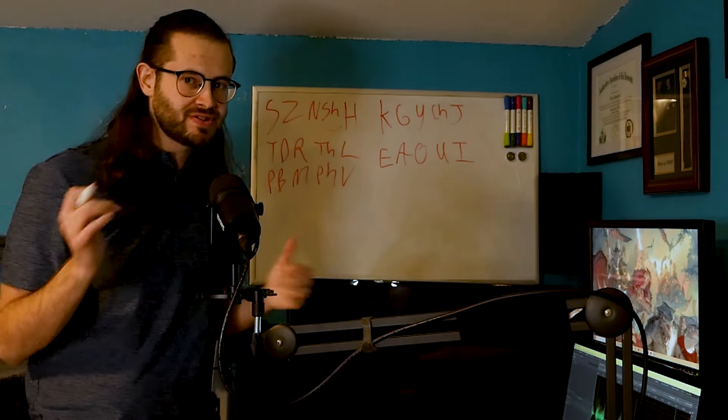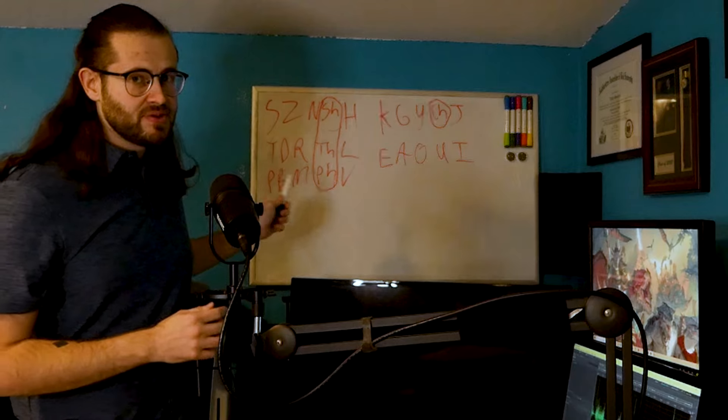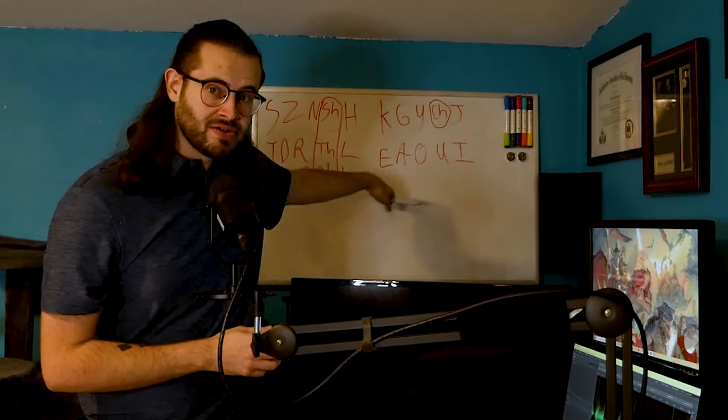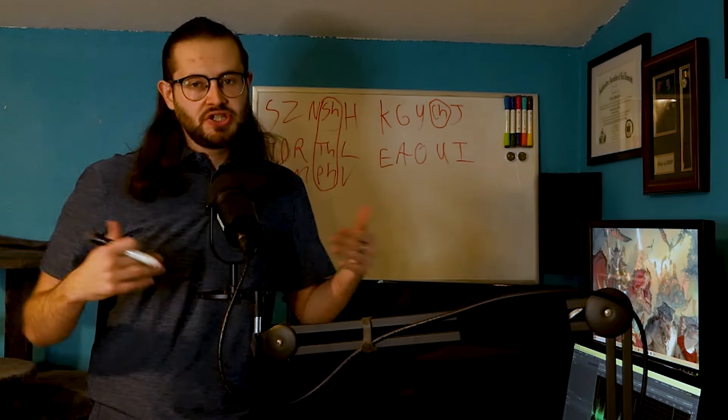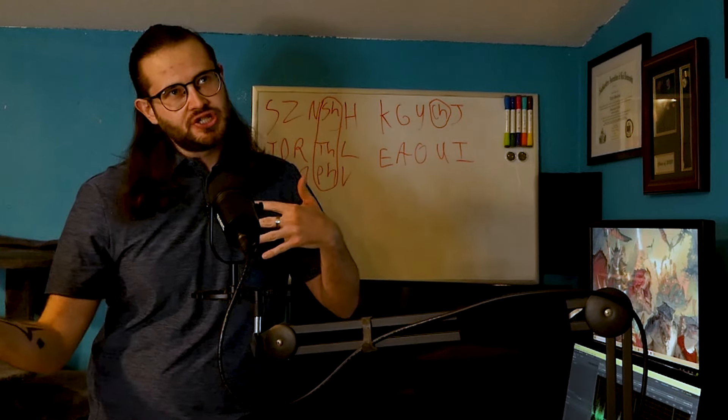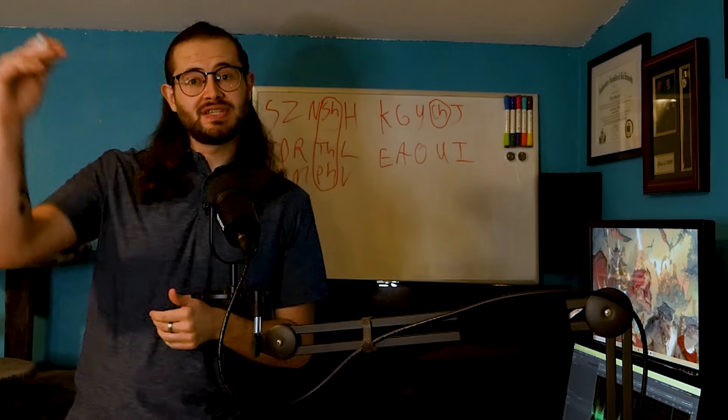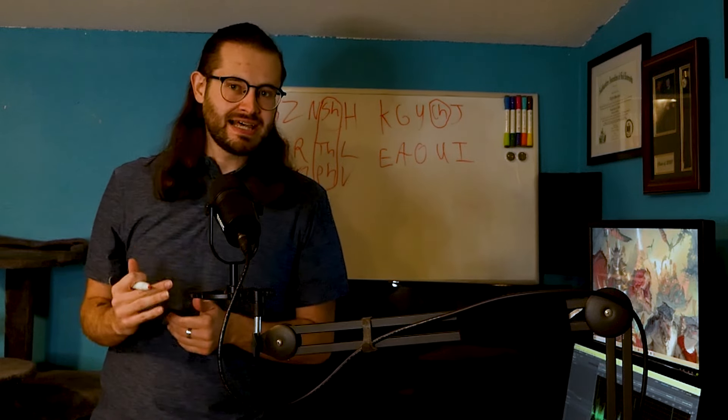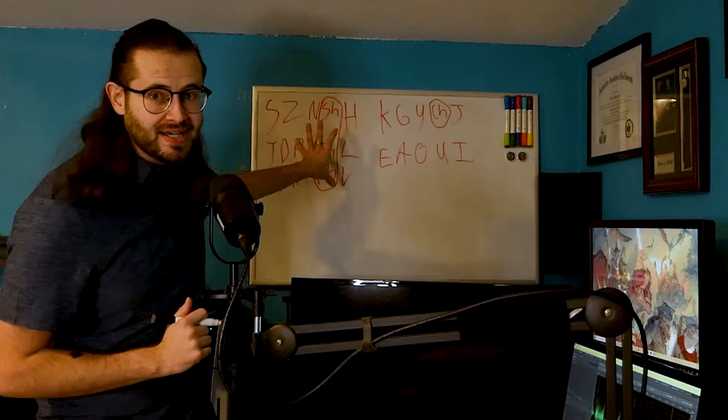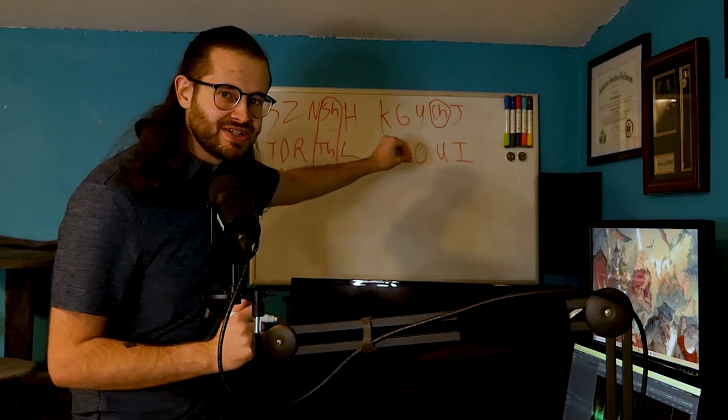Now, what do you notice about most of these sets? That fourth symbol, excluding the vowel set, is your Ch, Th, Sh, F sounds. These are your fourth symbol. This is the two-thirds with two slashes symbol. Remember what I said about symmetry and patterns.